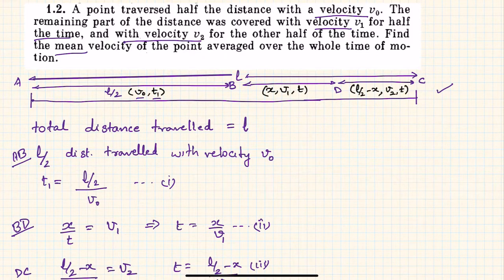In the second part of the journey, let's say x distance is traveled with v1 velocity and time taken is t. The other half, or the remaining part of the